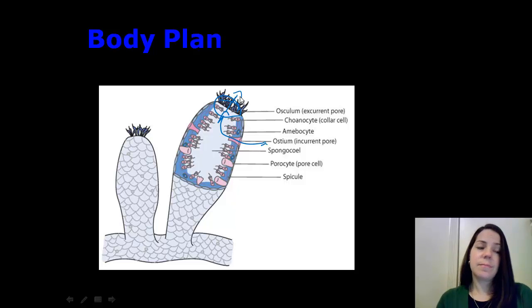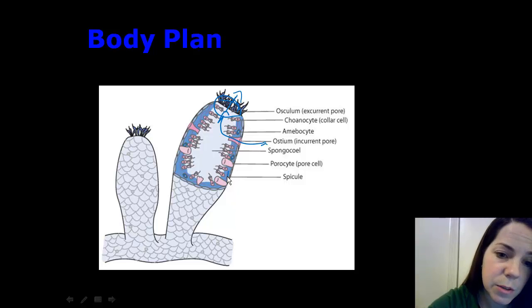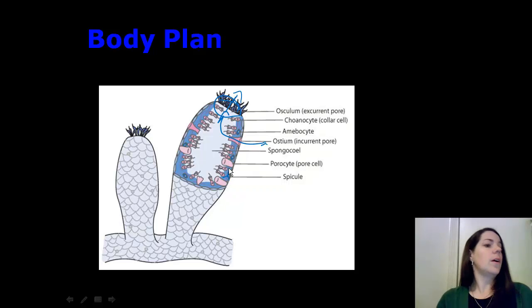Skeleton. The skeleton is very simple in the sponge, and there are two types. The first type is for harder sponges, like the glass sponge, for example. They're made up of spiny spicules of calcium carbonate. So you can see a spicule located right in here, or silicon dioxide. Now, softer sponges,